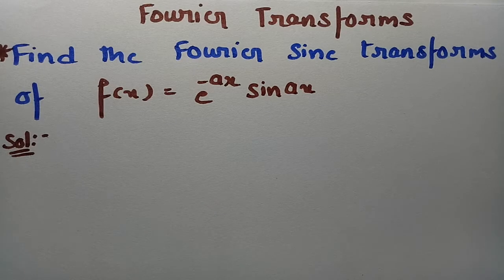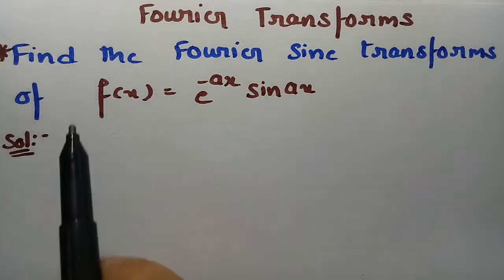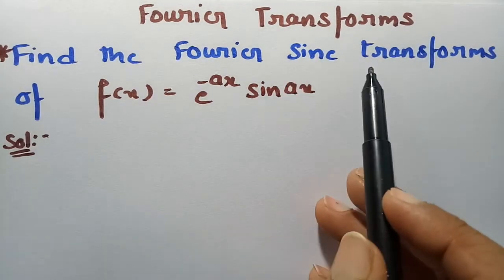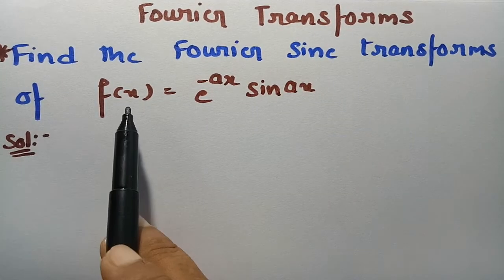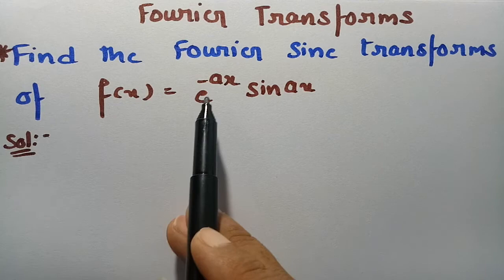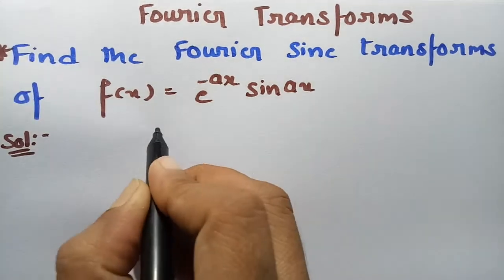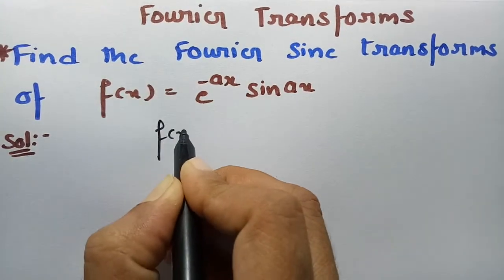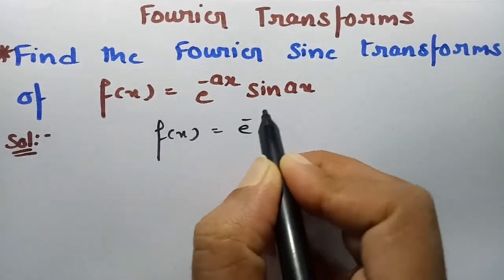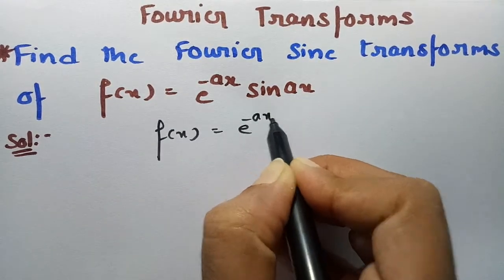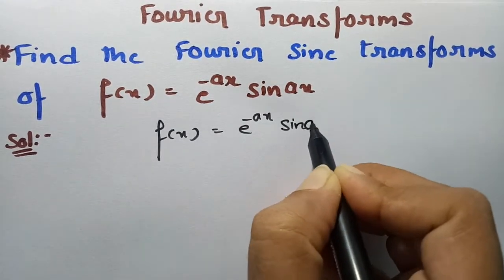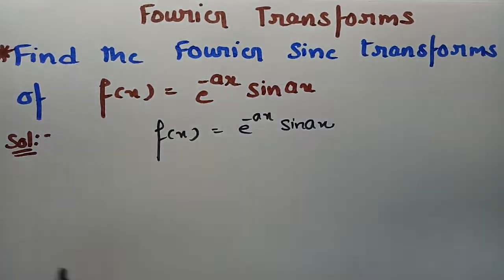Today I have come forward to help you find a solution for the problem on the screen from Fourier transforms. We have to find the Fourier sine transform of the function f(x) = e^(-ax) · sin(ax). Our function is very clear: f(x) is given as e^(-ax) · sin(ax).